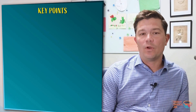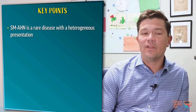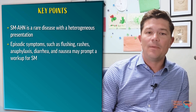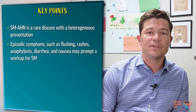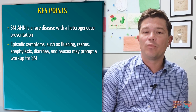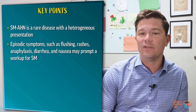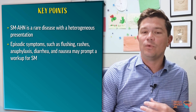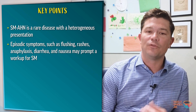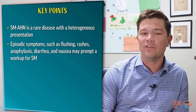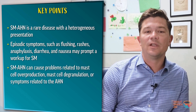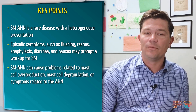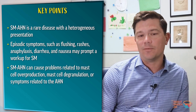So what are the take-home points? First, SM-AHN is a rare disease with a heterogeneous presentation. Episodic symptoms such as flushing, rashes, anaphylaxis, diarrhea, and nausea may prompt a workup for a mast cell disorder. SM-AHN should be considered when you see abnormal blood counts or another hematologic disease occurring in association with these symptoms. SM-AHN can cause problems related to mast cell overproduction, mast cell degranulation, or symptoms related to the associated hematologic neoplasm.